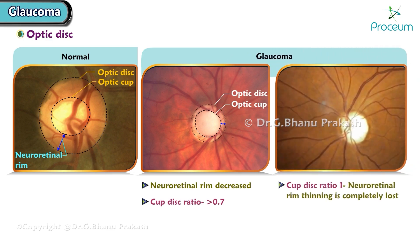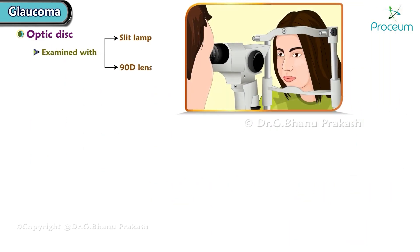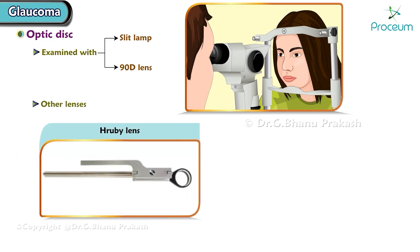Cup-disc ratio is more than 0.7 in glaucoma. Once the cup-disc ratio becomes 1, neuroretinal rim thinning is completely lost, and this state is known as glaucomatous optic atrophy. The optic disc is examined with a slit lamp and 90-diopter lens. Other lenses used are the Gruby lens, a plano-concave lens with 58 to 60 diopter power.